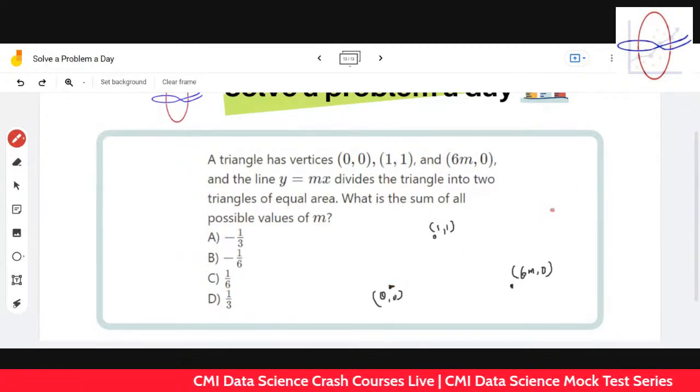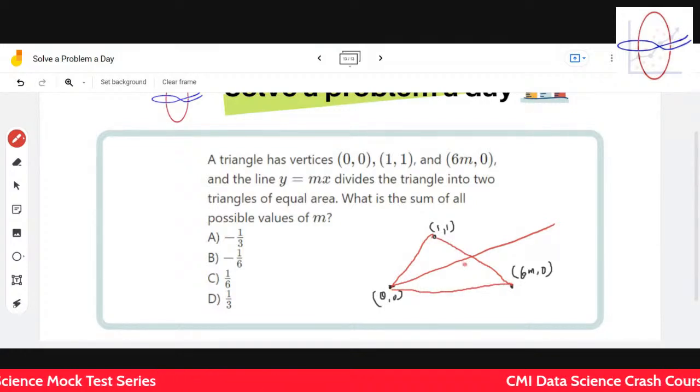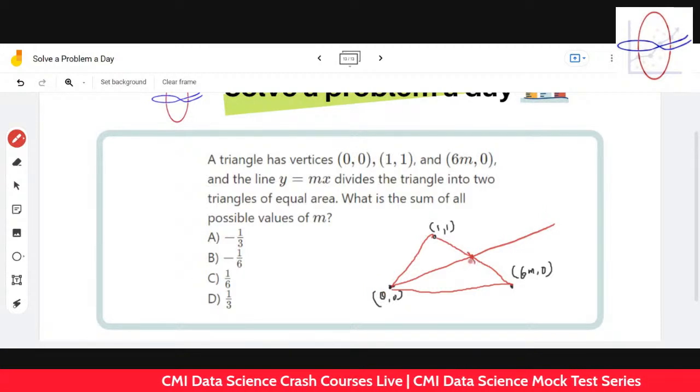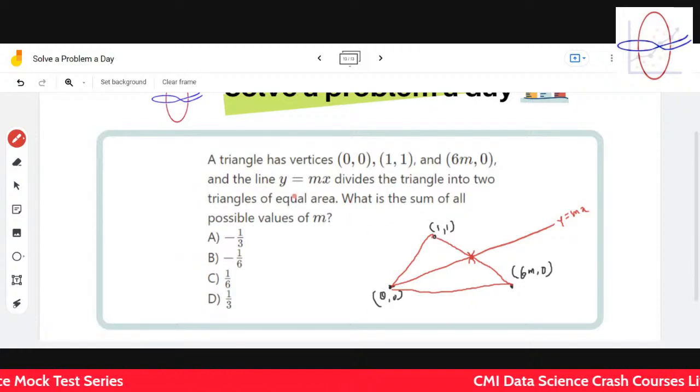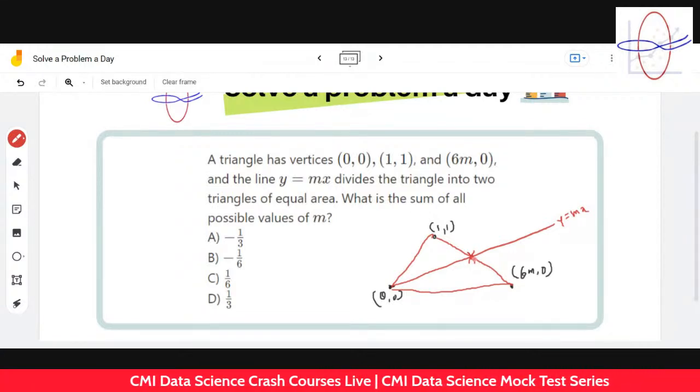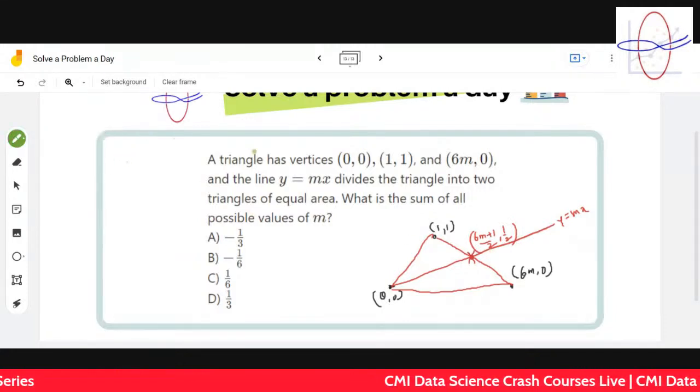If you remember, the median of a triangle divides the triangle into two. That means this must be the midpoint of this line, wherever it intersects. Therefore, line y = mx can only divide the line into two triangles if it cuts at the midpoint. What is the midpoint? It's (6m + 1)/2 and 1/2.